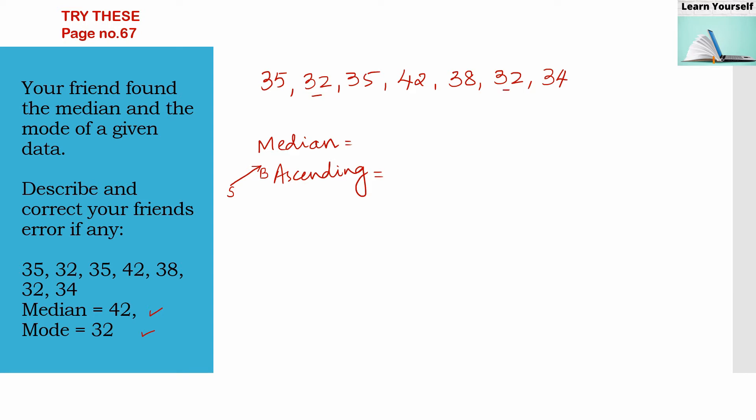Let us arrange the above data in ascending order. Which is the smallest number here? It is 32, so I am marking this 32. It is very important that whenever you are writing data, you have to mark them as I have marked below here. So after 32, 34 is there, then we have 35. Two 35s are there, so I am going to write two 35s here. After that 38 is there, and the last one is 42.